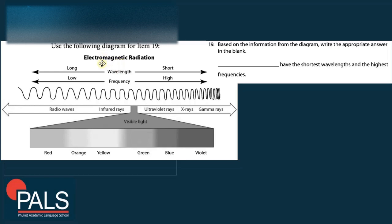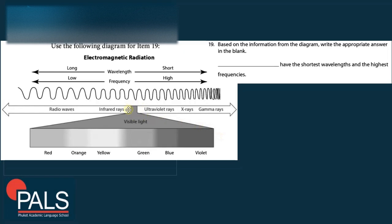Question 20 uses the electromagnetic spectrum, ranging from long wavelength/low frequency (radio waves) through infrared, visible light (red to violet), ultraviolet, X-rays, to gamma rays with the shortest wavelength and highest frequency. The question asks which type of radiation has the shortest wavelength and highest frequency. Following the arrow, the answer is gamma rays. Don't be confused by the visible light section — it is just a small portion of the full electromagnetic spectrum.